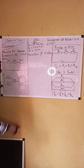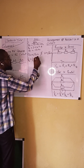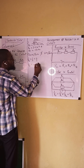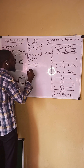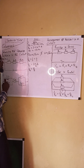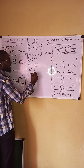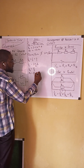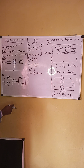For the first parallel group — 2 ohms in parallel with 3 ohms — we use the inverse formula: one over total resistance equals one over 2 plus one over 3. The LCM of 2 and 3 is 6, giving us 3 plus 2 over 6, which equals 5 over 6. Taking the inverse, total resistance equals 6 over 5, which is 1.2 ohms.